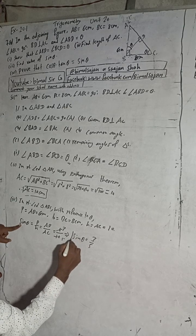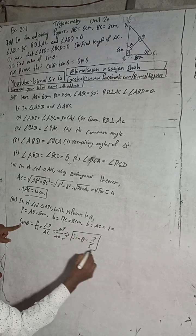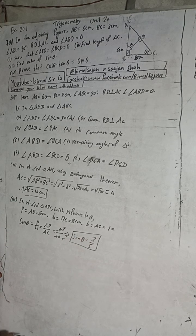Sin theta is equal to 3 by 5. This is the correct answer.